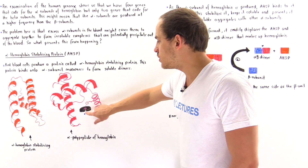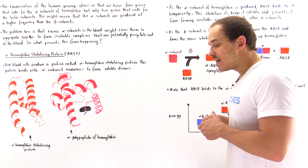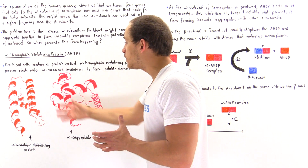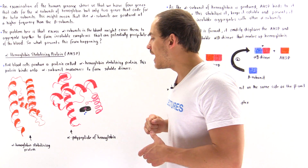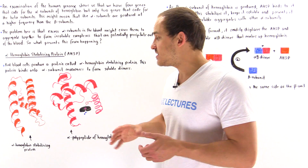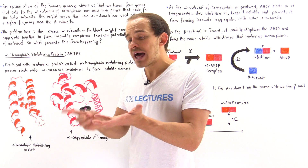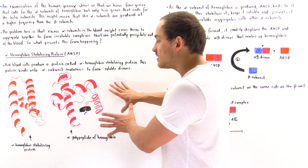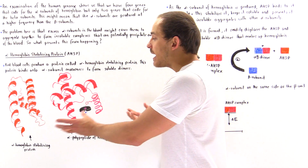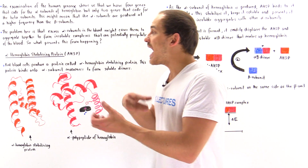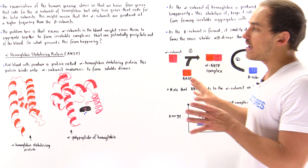What the alpha hemoglobin stabilizing protein does is it binds onto this alpha polypeptide chain on the same region as where the beta unit would bind. When the AHSP binds onto this alpha unit monomer, it forms a dimer complex that is more stabilized than when the alpha unit exists in its individual form, and it is also soluble in the blood plasma. By forming this complex, it basically prevents the aggregation and precipitation of those alpha unit complexes.